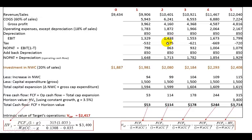Subtracting taxes — 40% of each EBIT amount — we find NOPAT, which is the after-tax EBIT. If we add back depreciation, we find operating cash flow, which equals NOPAT plus depreciation.